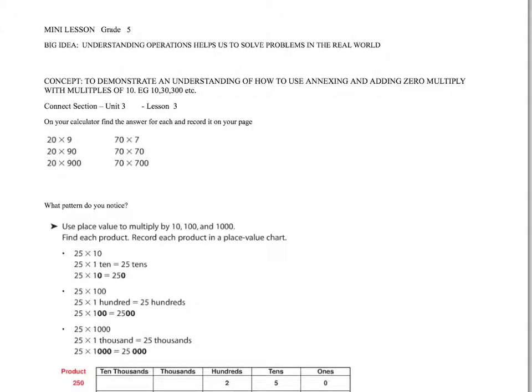Alright, continuing on with our big idea of understanding operations—adding, subtracting, multiplying, dividing—helps us to solve problems in the real world. Today we're going to work on demonstrating an understanding of how to use annexing and adding zero back on to multiply with multiples of 10, 30, 300, and so on. We have touched on this a little bit in class, but just barely, so it might seem somewhat familiar. We are unit 3, lesson 3 in the connect section.